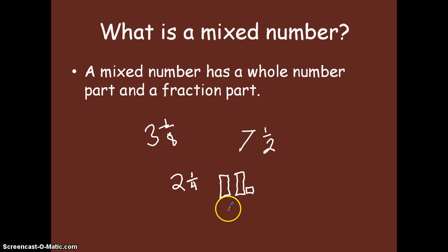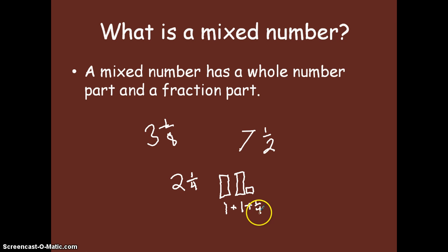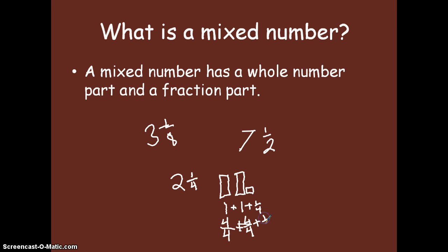If we want to express this as a fraction sentence, we could say 1 plus 1 plus 1 fourth. I could also use a different form of 1. Because 4 is our denominator, we always want to have like denominators when we add fractions, so I'm going to give this a denominator of 4. Since the denominator is 4, my numerator must also be 4 to equal 1 — so 4 fourths. 4 fourths plus 4 fourths plus 1 fourth is equal to 2 and 1 fourth, because we have a whole here and another whole, and then our fourths.